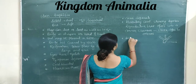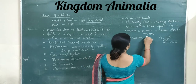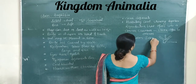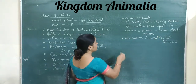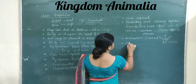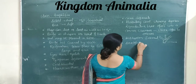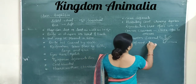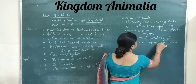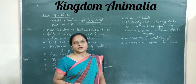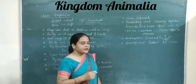Fertilization is external — it occurs outside the body. The development is indirect, meaning a larval stage is present; that larval stage undergoes metamorphosis and changes into the adult amphibian.